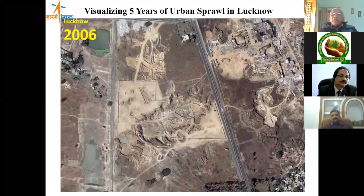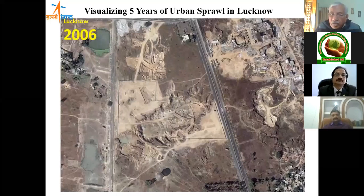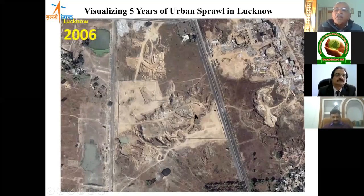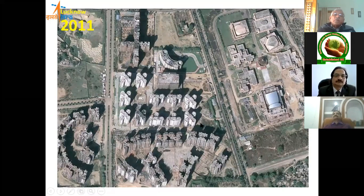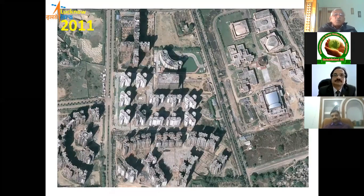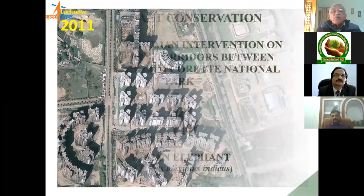Satellites can also track urban sprawl. For example, Lucknow in 2006 shows not much activity in a particular area, but comparing it with 2011 — just five years later — a big settlement has come up. Planners can use this to judiciously plan land resources, determine land use and land cover, and create a beautiful city plan.